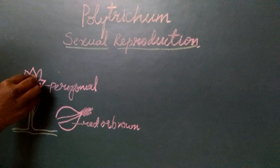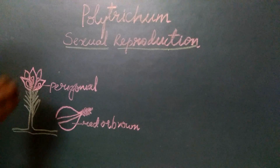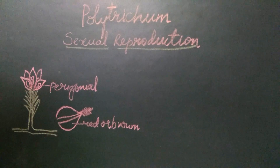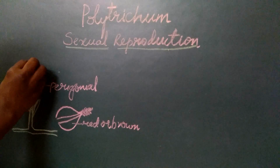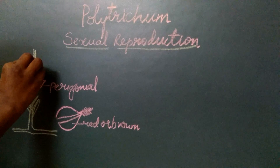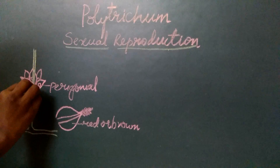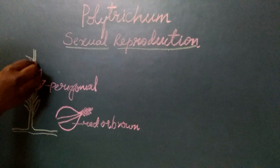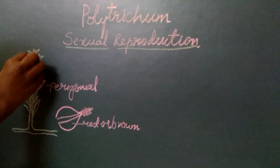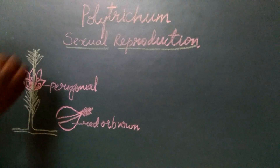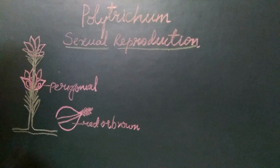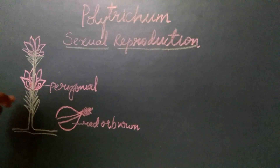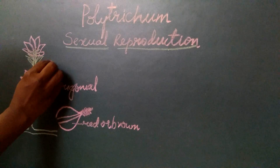In the process of development of the antheridium, the apical bud of the main plant is not used. So the plant continues its growth after the production of the antheridia. Again, after vegetative growth comes to an end, another cluster of perigoneal leaves is seen at the apex of the main plant. This type of growth after the formation of the moss flower in the male plant is called proliferation.